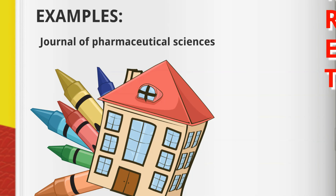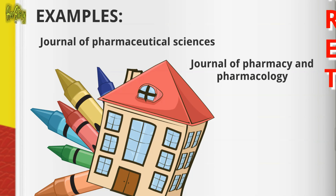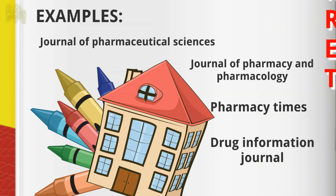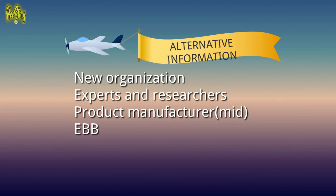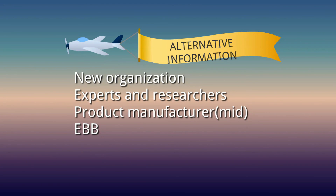Examples of primary literature are mostly journals, such as the Journal of Pharmaceutical Sciences, Journal of Pharmacy and Pharmacology, Pharmacy Times — which is well-known and can even be found on Facebook — and the Drug Information Journal.